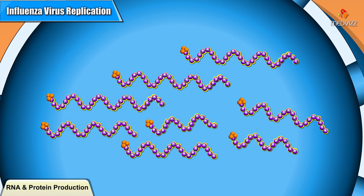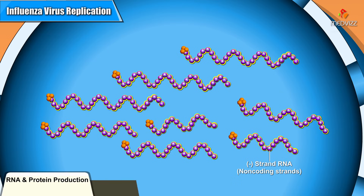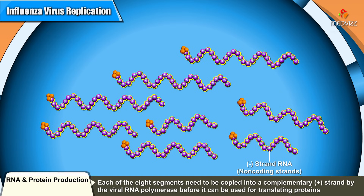The RNA segments are minus-strand RNAs, meaning that they are non-coding strands. Each of the eight segments needs to be copied into a complementary plus strand by the viral RNA polymerase before it can be used for translating proteins.